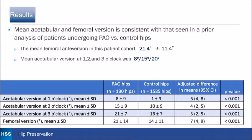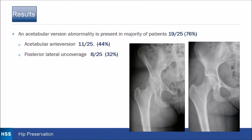An acetabular version abnormality was present in the majority of patients — 76%. Eleven of 25 (44%) had acetabular anteversion or anterior undercoverage, as seen on the left X-ray, and posterior-lateral undercoverage in 8 of 25 (32%), as seen on the right X-ray with a very vertical posterior wall.